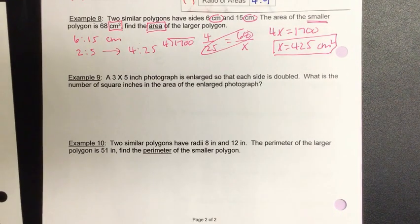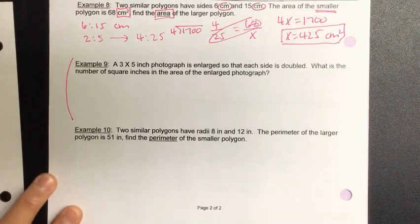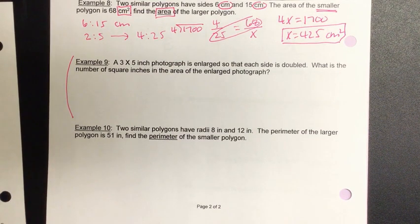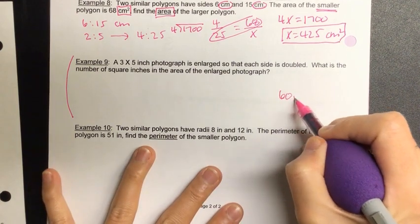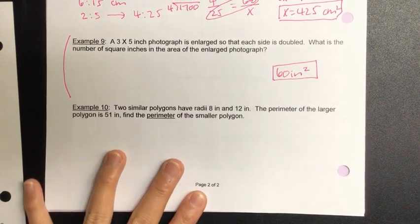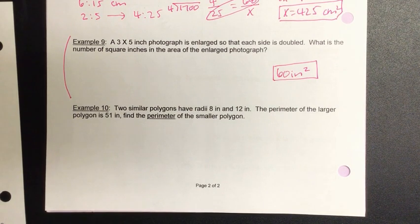All right. Let's go on to example 9 and 10. And actually, let's do example 9 with the partner. Go. A 3 by 5 inch photograph is enlarged so that each side is doubled. So, 6 by 10. What is the number of square inches in the area of the enlarged photograph? 60. Okay. So, you can go ahead and look at the ratio or take 3 by 5 and double that. 6 to 10 and get 60. All right?